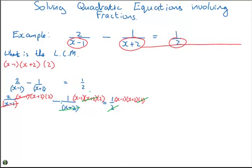The next line then is 2 by 2 is 4 times x plus 2, minus 2 by 1 is minus 2 times x minus 1, is equal to x minus 1 times x plus 2.